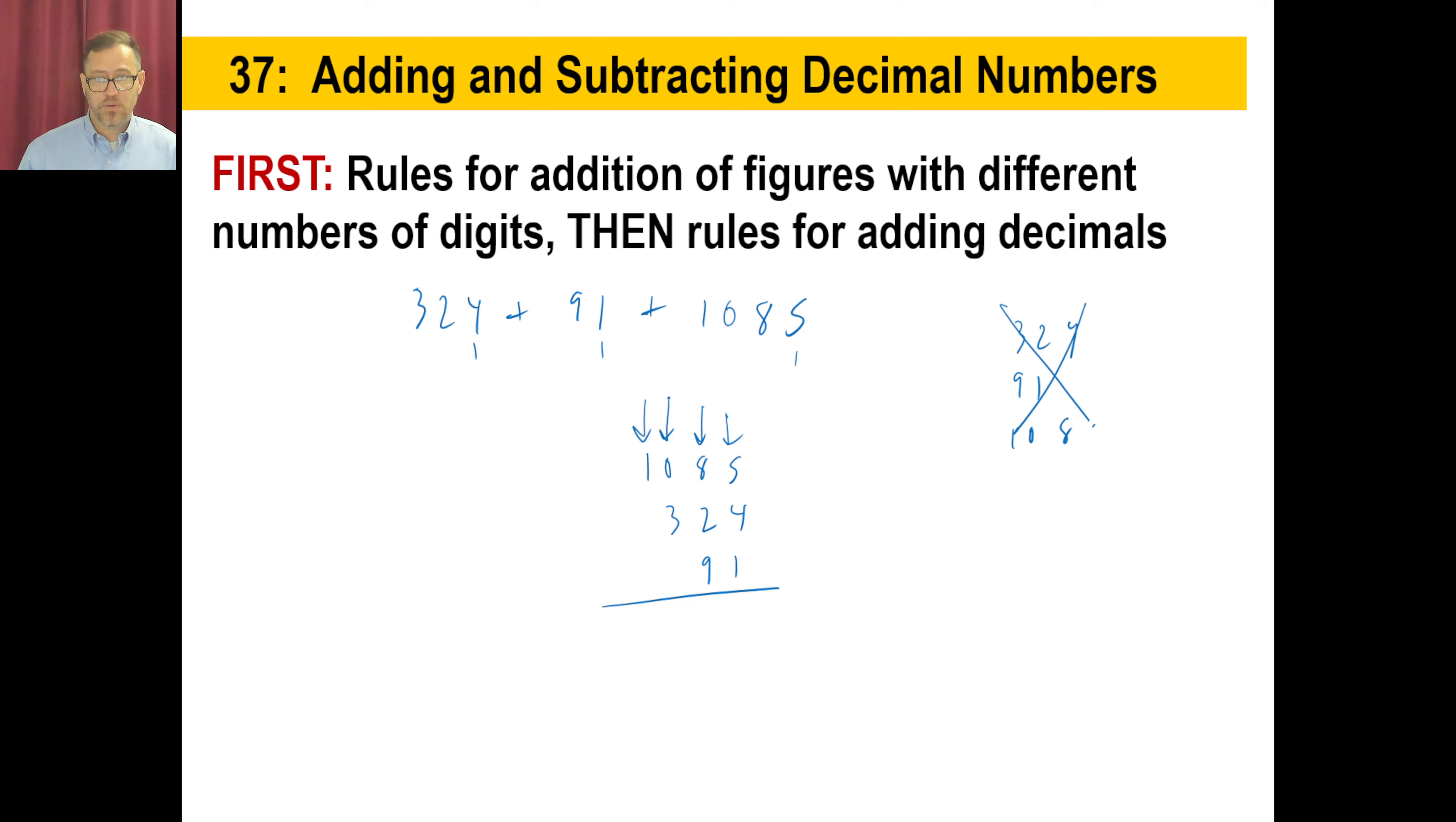The rules for adding decimals are very similar. So if you have 3.24 plus 0.91 plus 1.085, what you're going to do this time is line up the decimals. And what will happen is if you line up the decimals, all the tens, the hundreds and the thousands of the integers, the whole numbers will be lined up automatically.